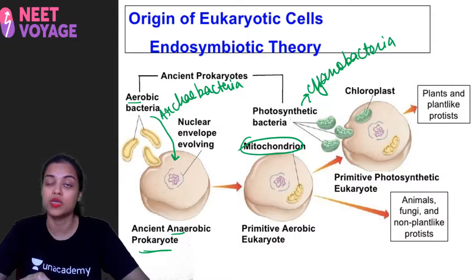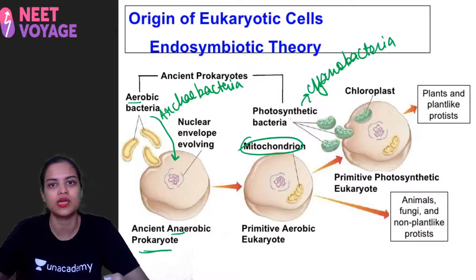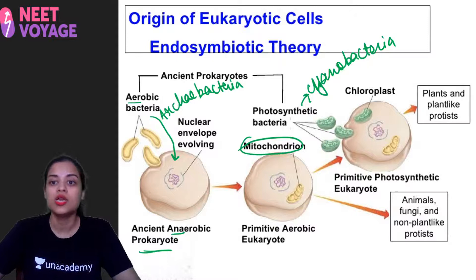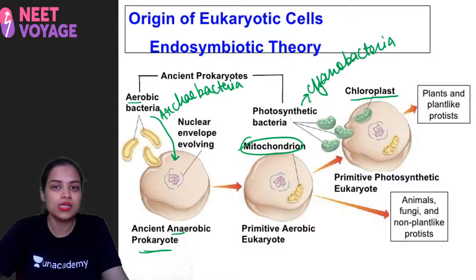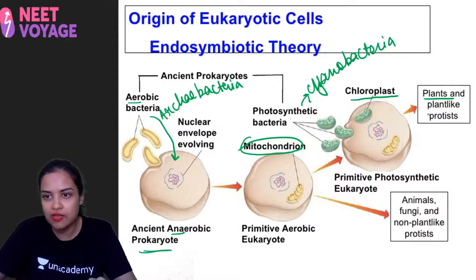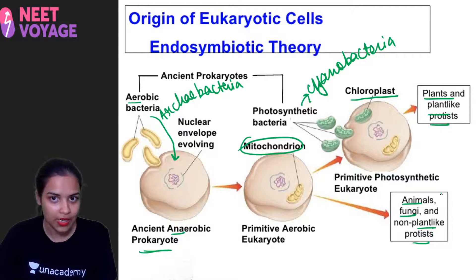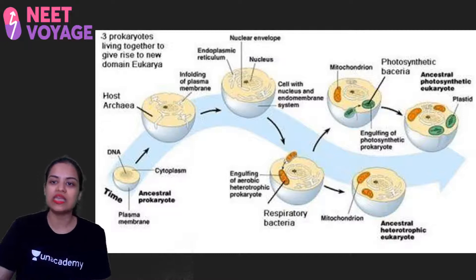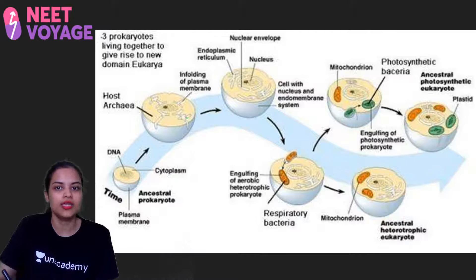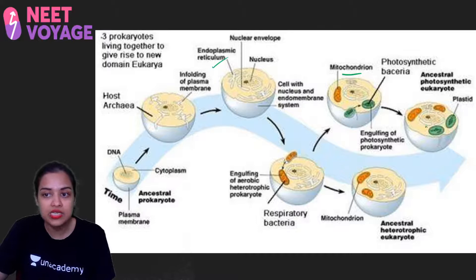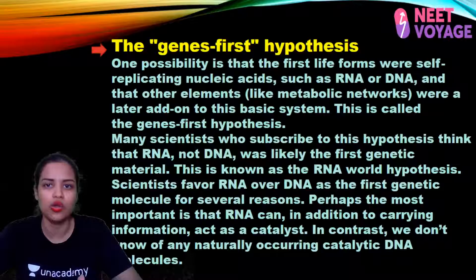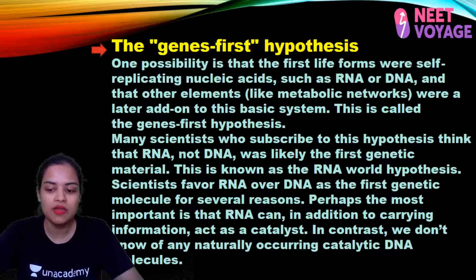So you got plant-like protists, certain animals, fungi, and non-plant-like protists. Blue-green algae is a plant-like protist that also came from this same process. You can see in the diagram how invagination is occurring, how endoplasmic reticulum formed, how mitochondria came in, how plastid and chloroplast formed. This is how your biogeny was established.